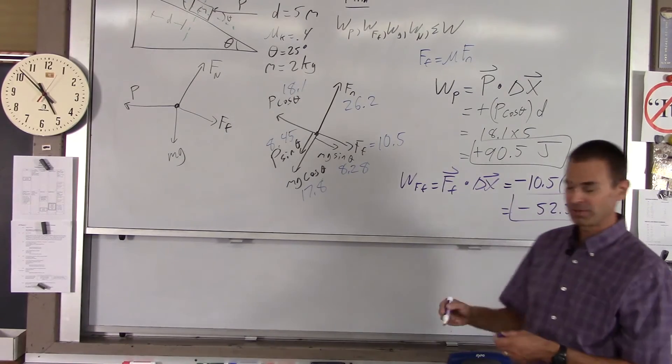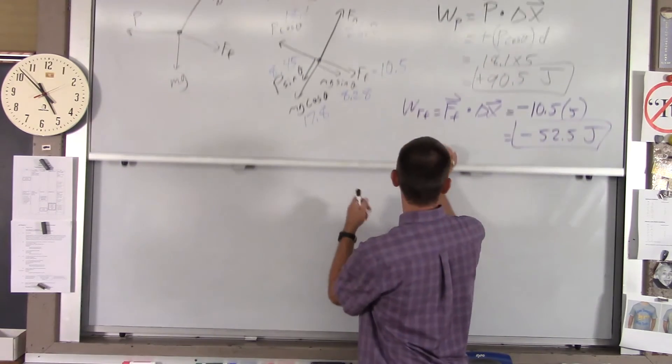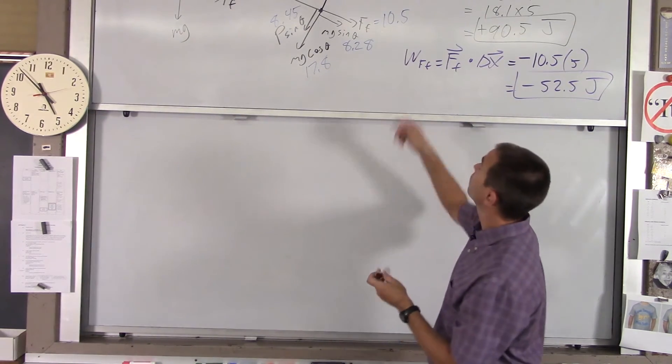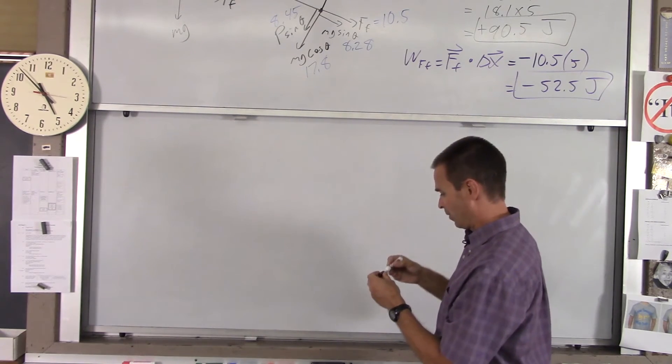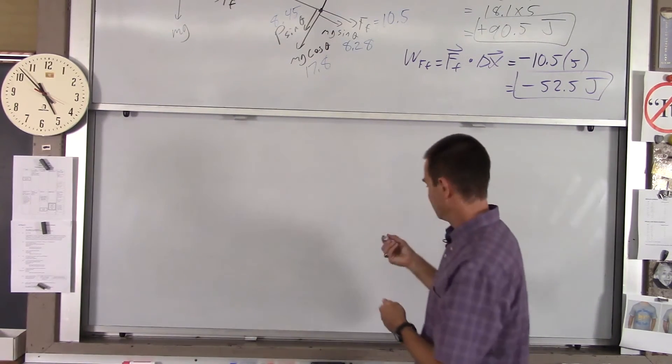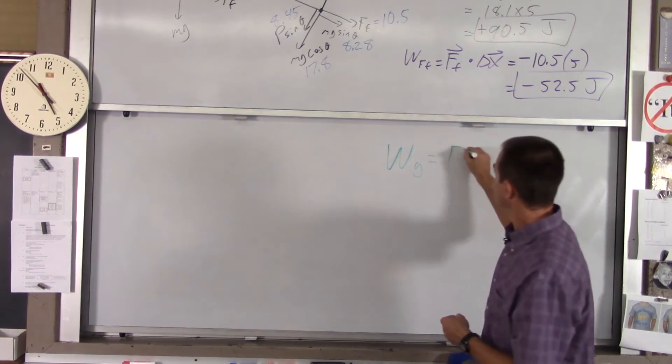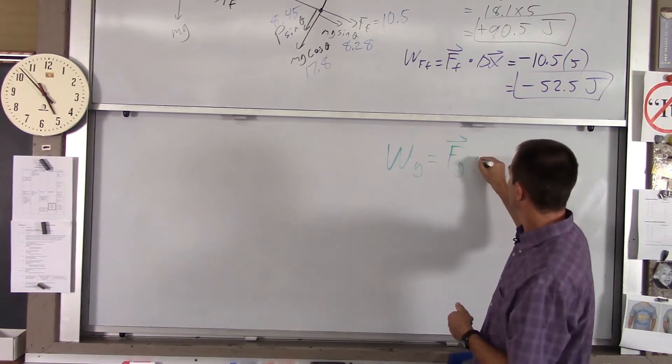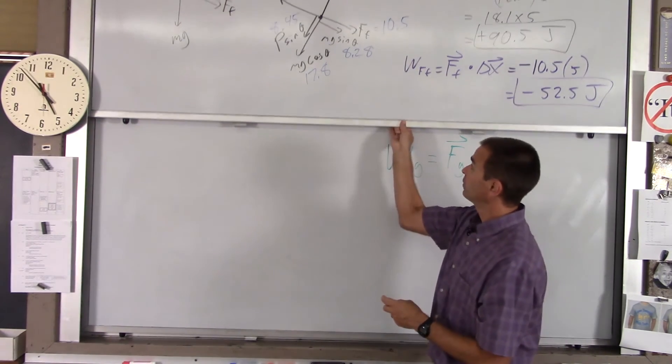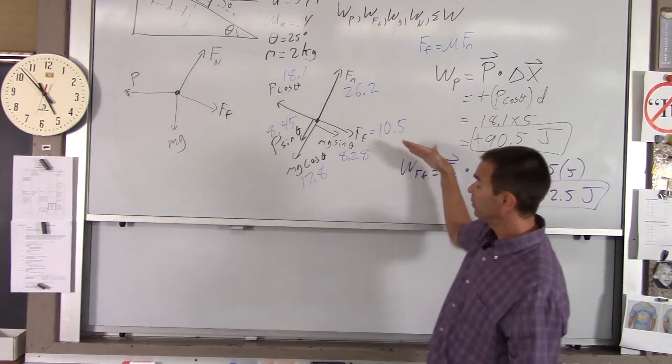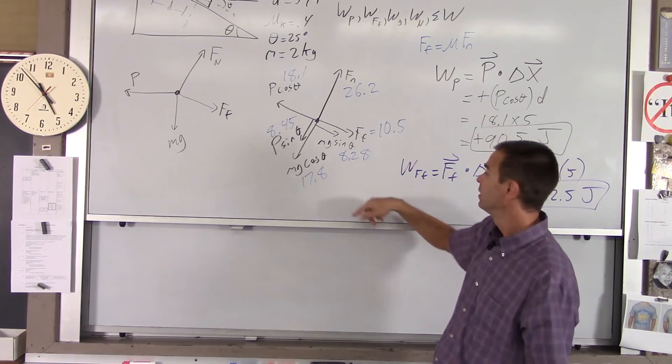Through a similar process, we'll do the work done by gravity. Work done by gravity equals the force of gravity dot delta x. You ask yourself the same question: which component of gravity is parallel to the direction of motion? Well, it's mg sine theta, which is 8.28.